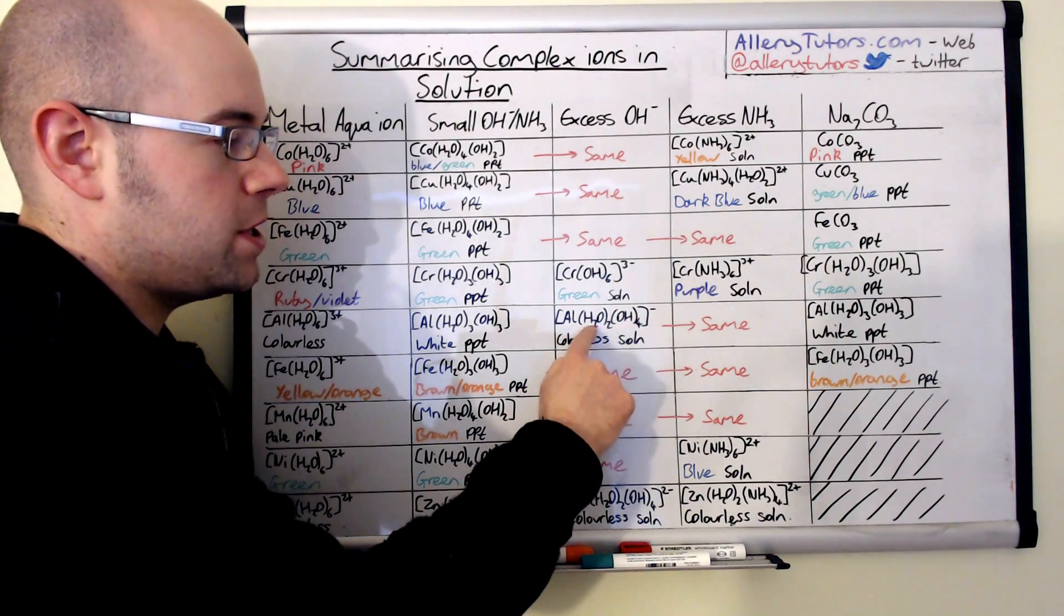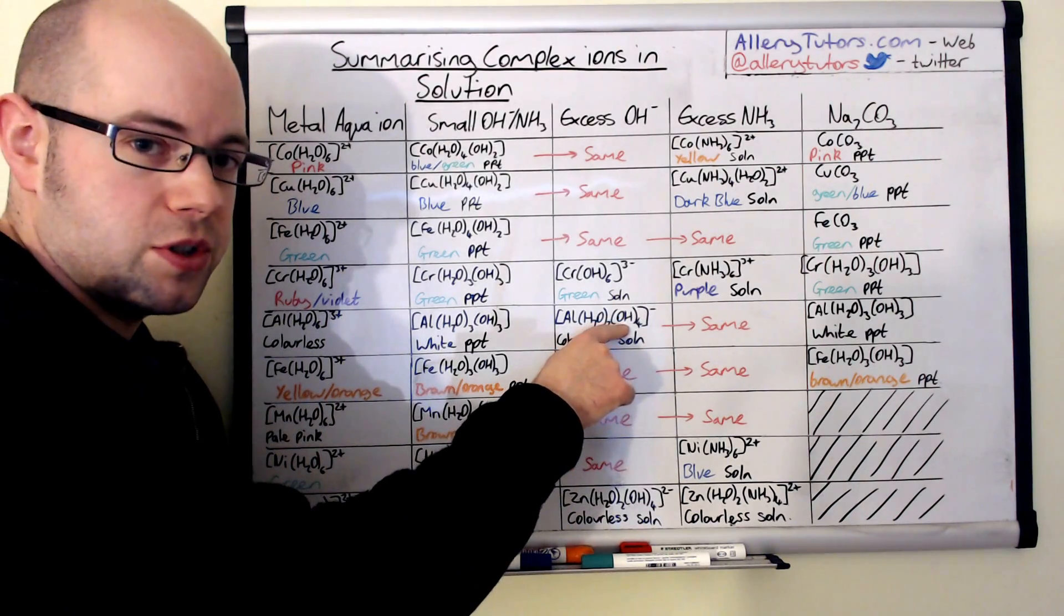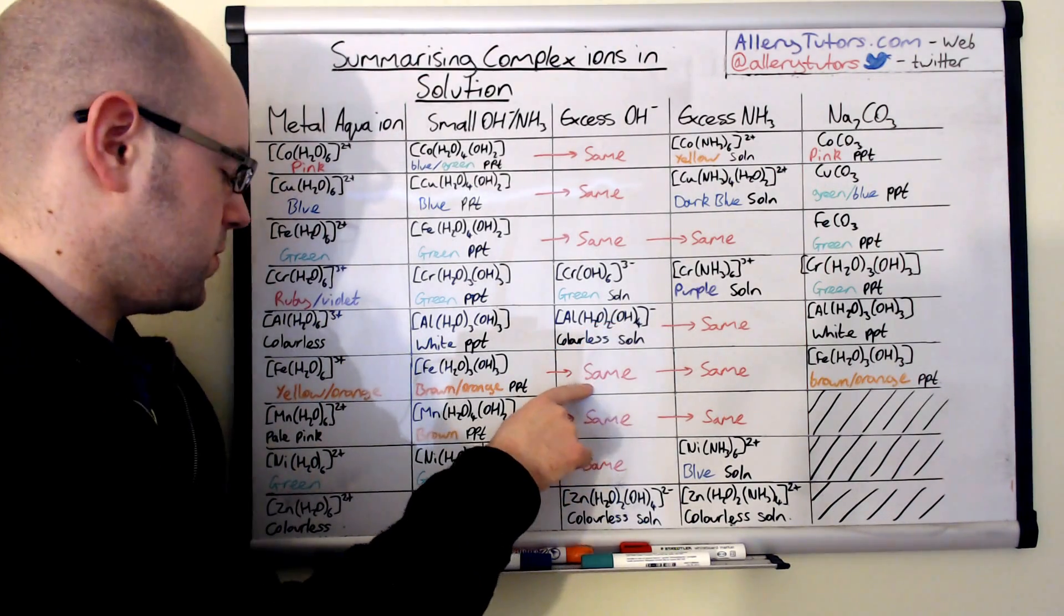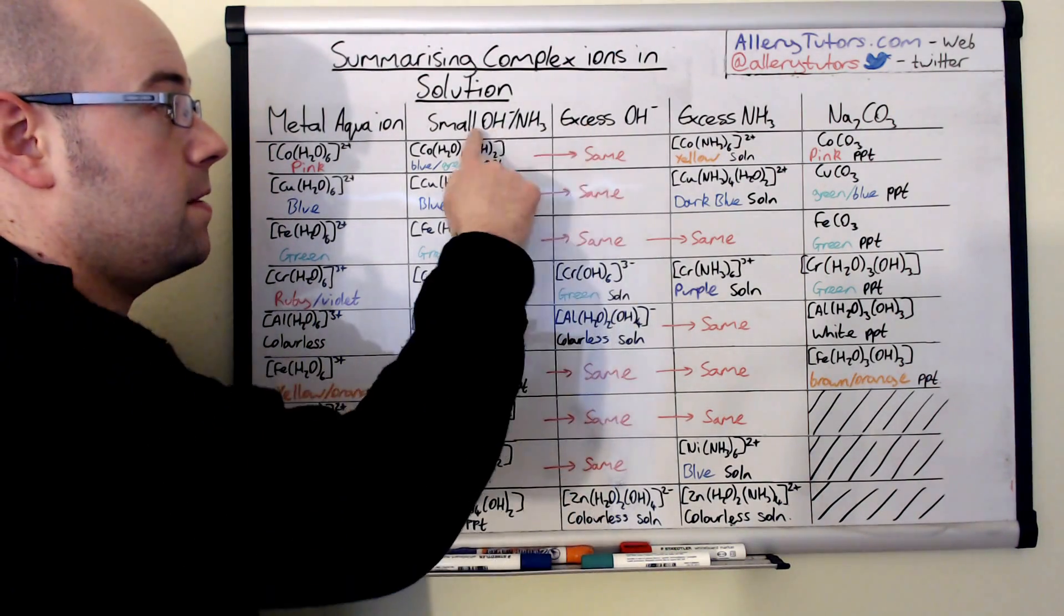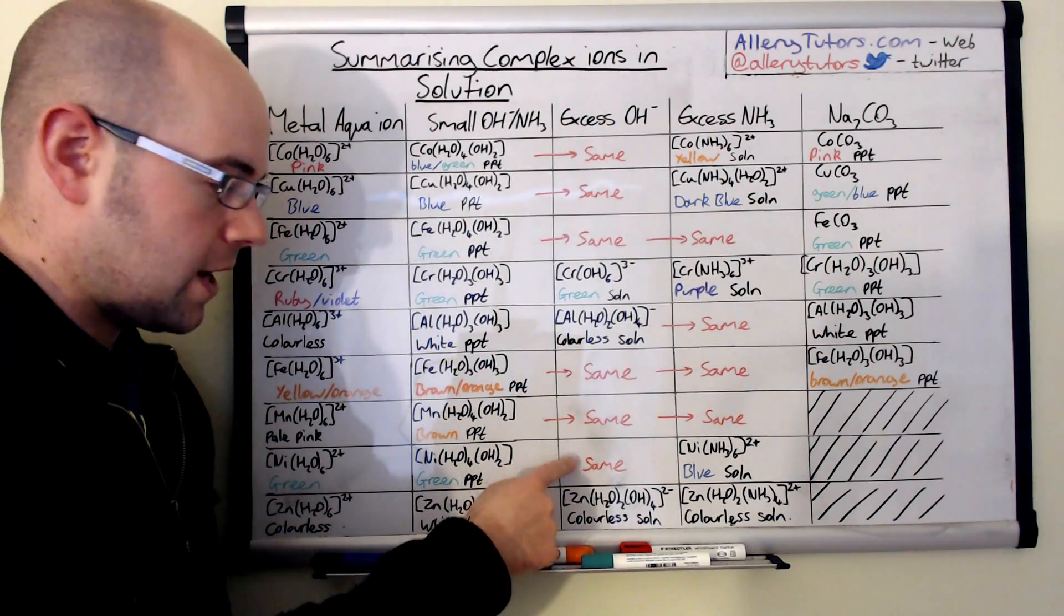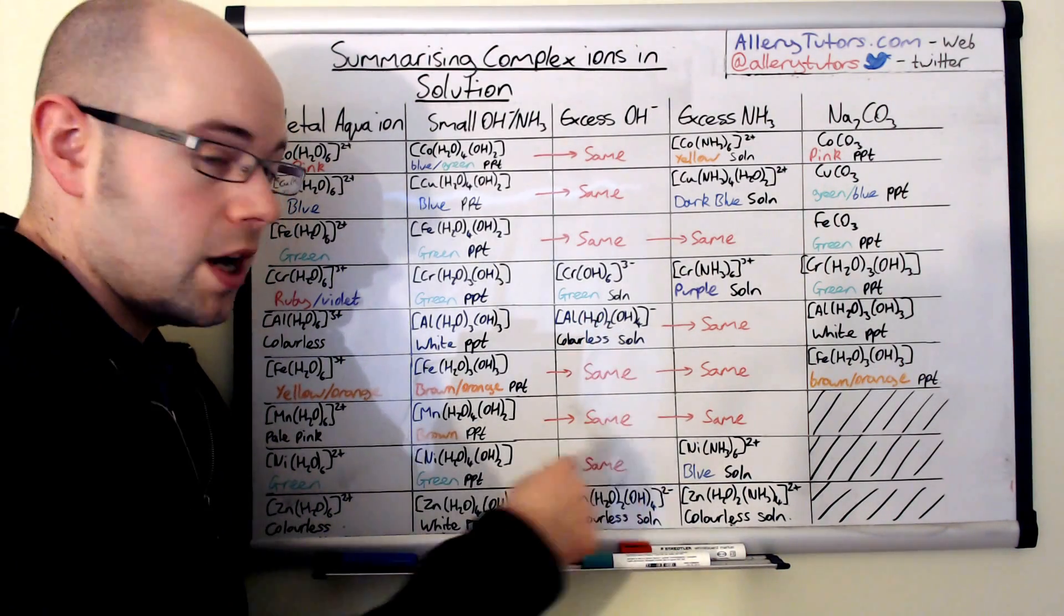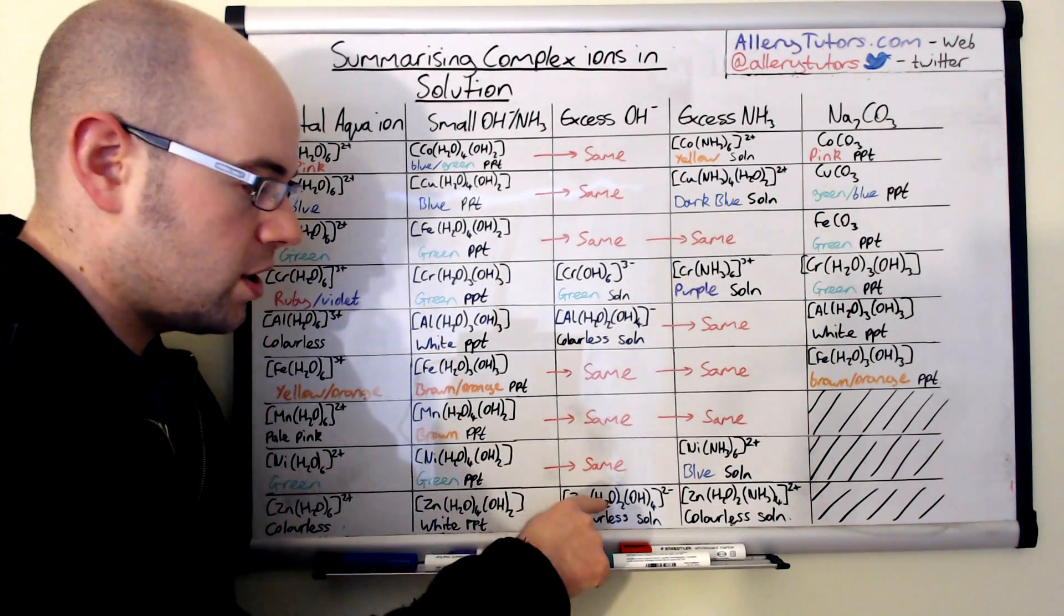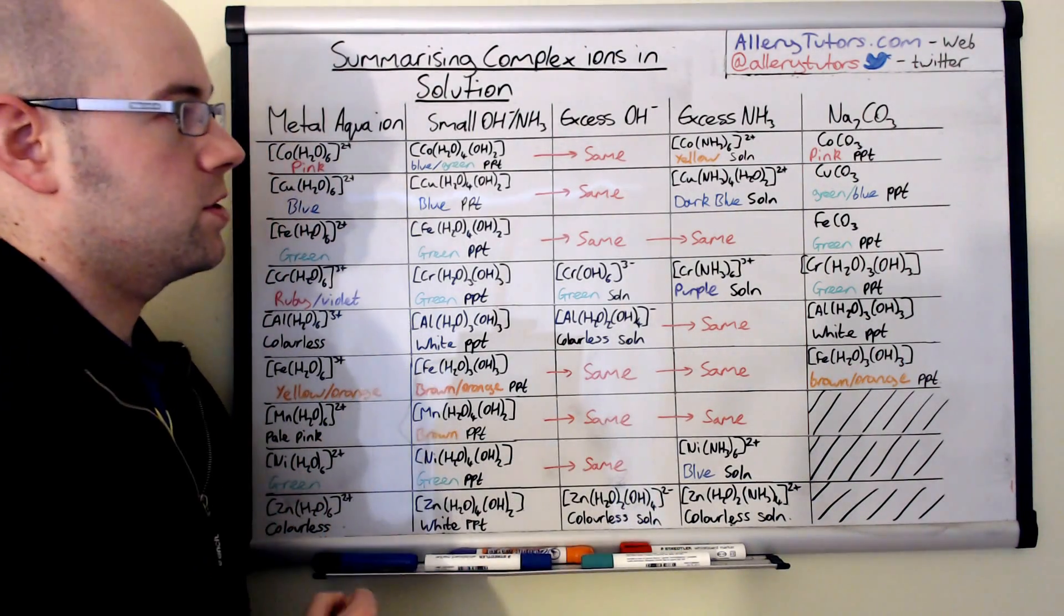It's the same with the aluminium as well except the aluminium doesn't go all the way, we have a partial substitution there. With the iron 3 and the manganese and the nickel it's the same as with small amounts, there's no further change there. And then with the zinc one again just like the aluminium it only does a partial substitution and we only have H2O2, but again a colourless solution is formed because it's dissolved.